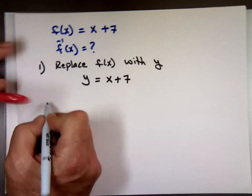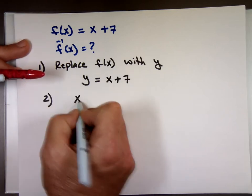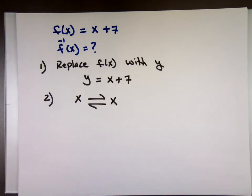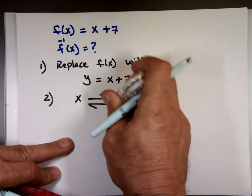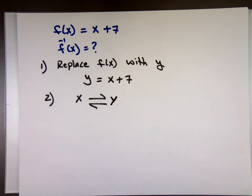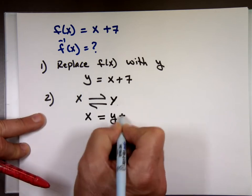Step number two. I'm going to interchange x and y. x and y. Meaning what? x becomes y and y becomes x. Interchange x and y. So, this becomes x equals y plus 7.